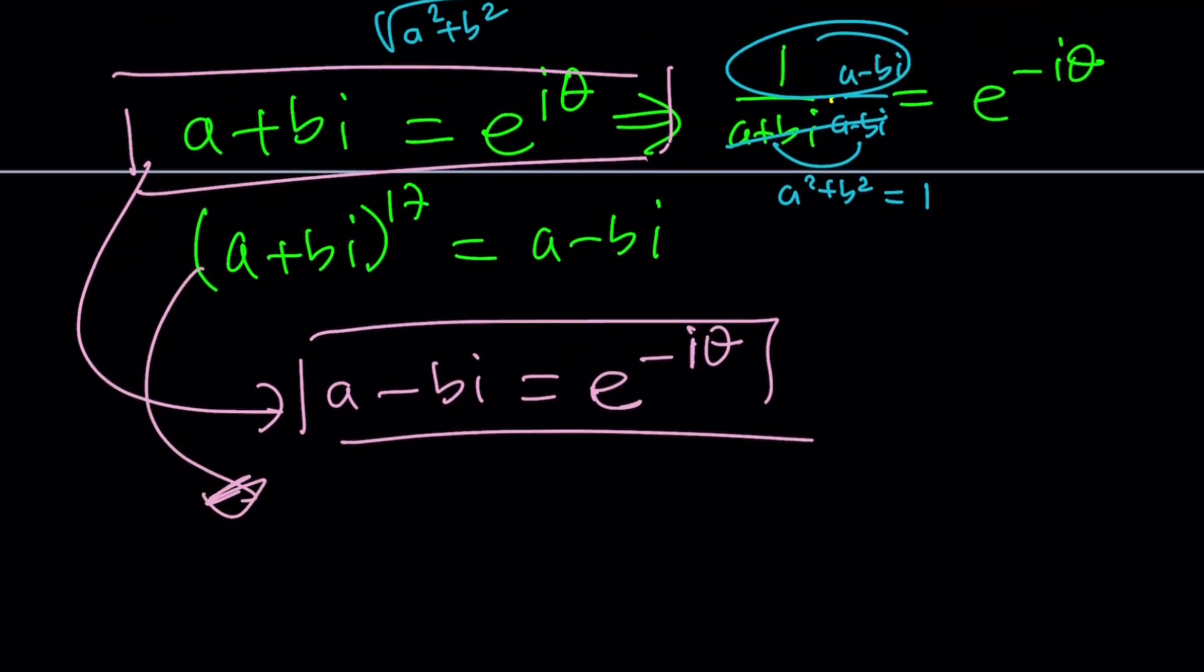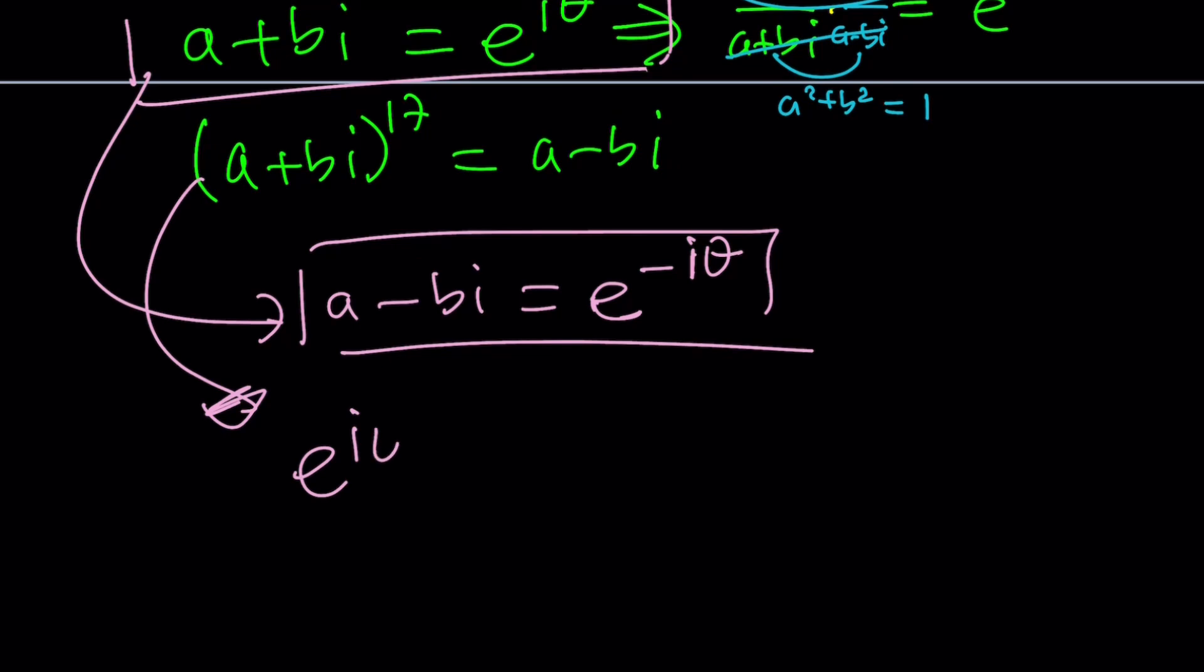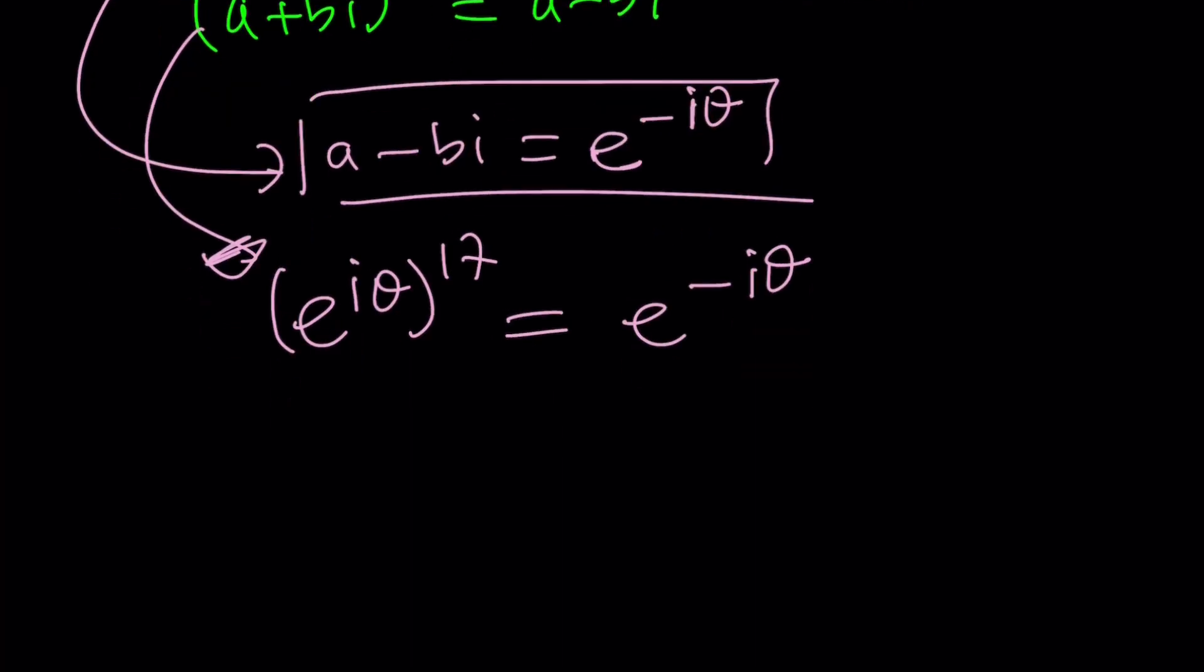Let's go ahead and use this in that equation. I have E to the I-theta and then raised to the 17th power equals E to the negative I-theta. And now from here, by simply raising this 17 I-theta and negative I-theta, I put everything on the same side. 18 I-theta equals 0. 18 is not 0. I is not 0. Theta must be 0. Case closed. That's it. Nope. That's not the end of the story. This is actually where the story starts.